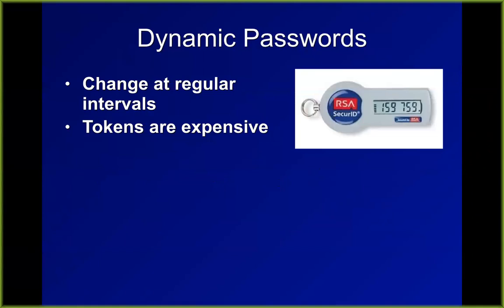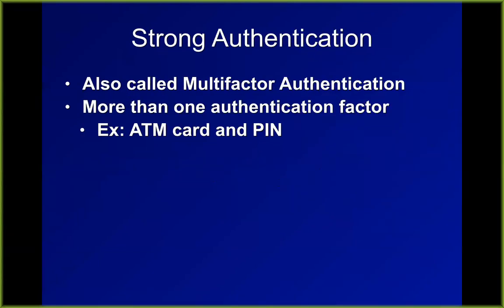Although they're expensive, RSA tokens are considered quite secure. This gets us into strong authentication, also called multi-factor authentication, where you have more than one authentication factor — it has to be two different types. Two passwords, or a password and a PIN is not two-factor authentication. It has to be two of those types: what you know, what you have, and what you are — two different things.